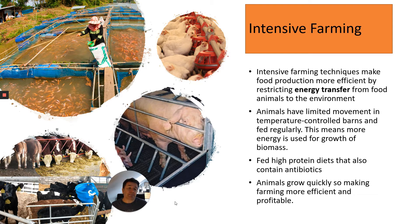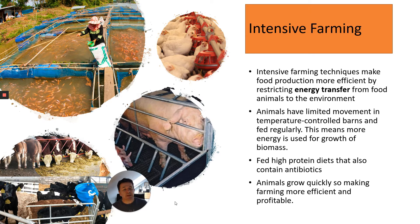Animals have limited movement in temperature-controlled barns. Temperature control means less energy is lost through respiration and heat transfer, so more of that energy is used for growth of biomass. They're also fed high-protein diets that sometimes contain antibiotics to stop them getting ill. An issue with antibiotics is that bacteria could develop resistance due to overuse. The high-protein diets are to increase growth rates so animals grow quickly, making farming more efficient and more profitable.